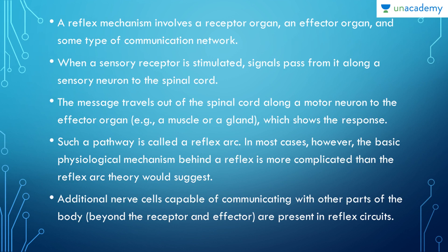When a sensory receptor is stimulated, signals pass from it along the sensory neuron to the spinal cord. For example, if I consider my fingertips as the sensory receptor organ — say I've touched something hot — then the message travels to the spinal cord, and comes out along the motor neuron to the effector organ. In this case the fingertips again act as the effector organ, as I pull them away from the hot surface. This pathway is termed the reflex arc.